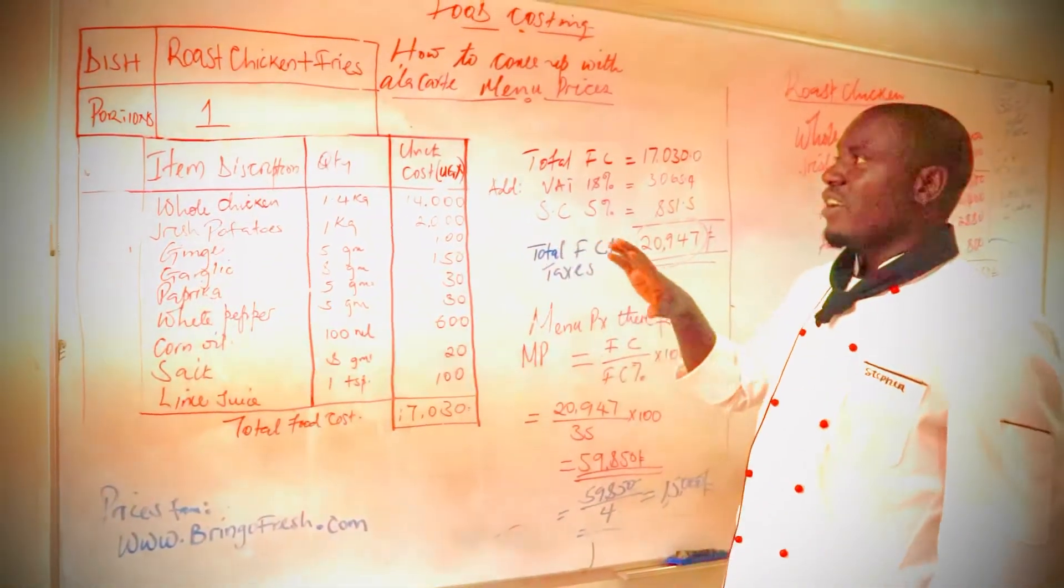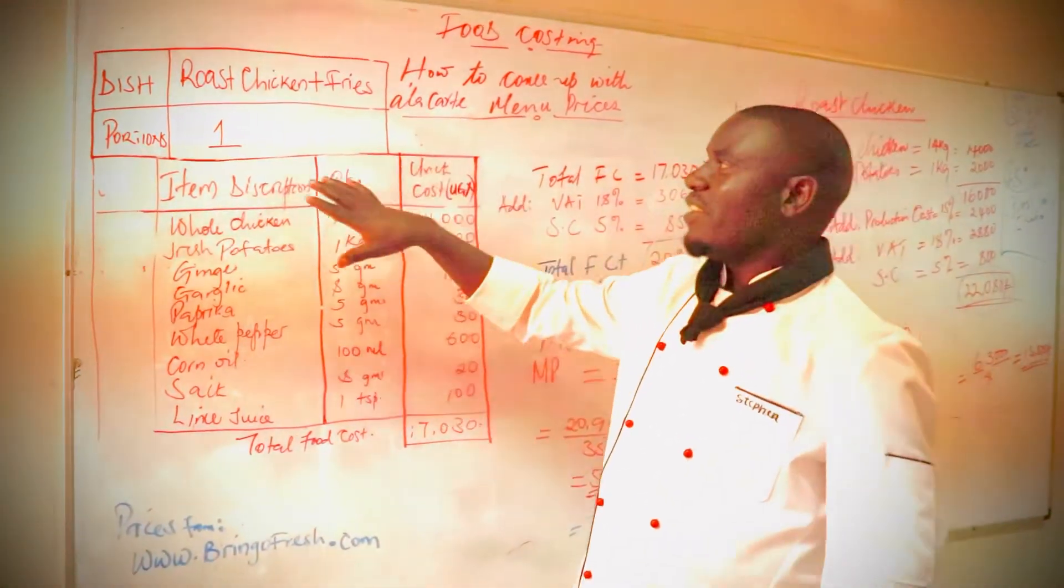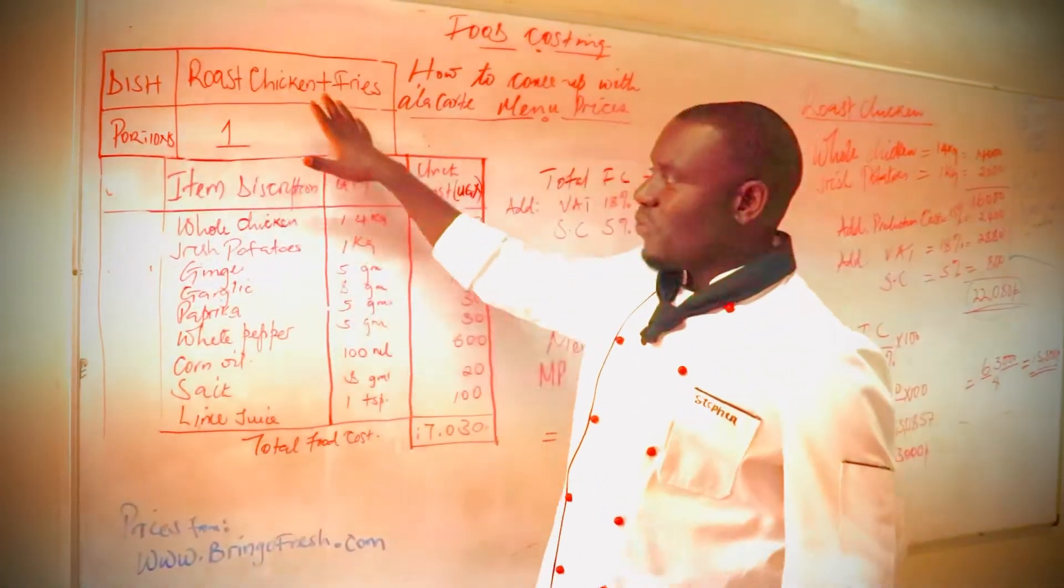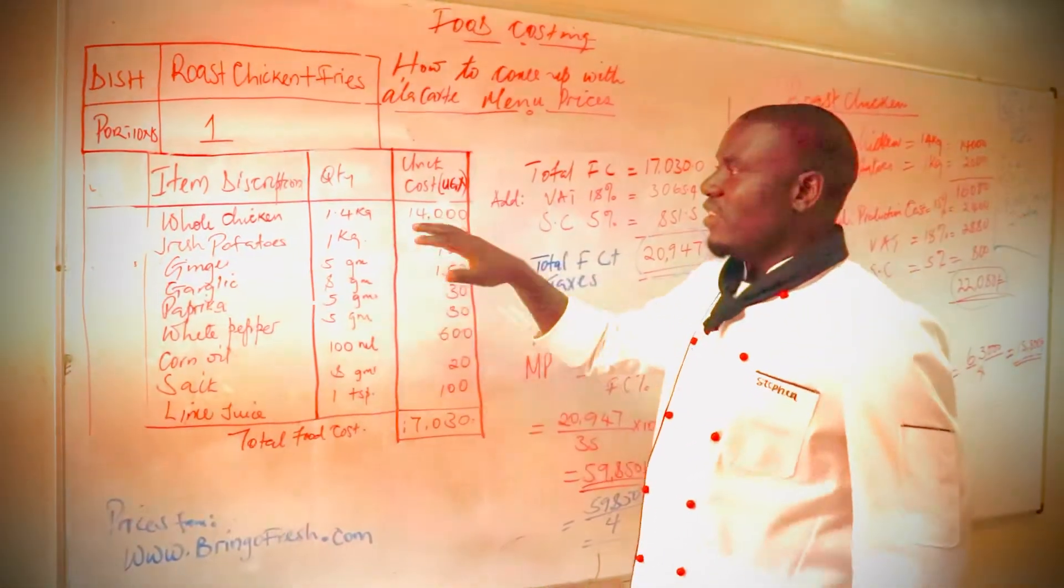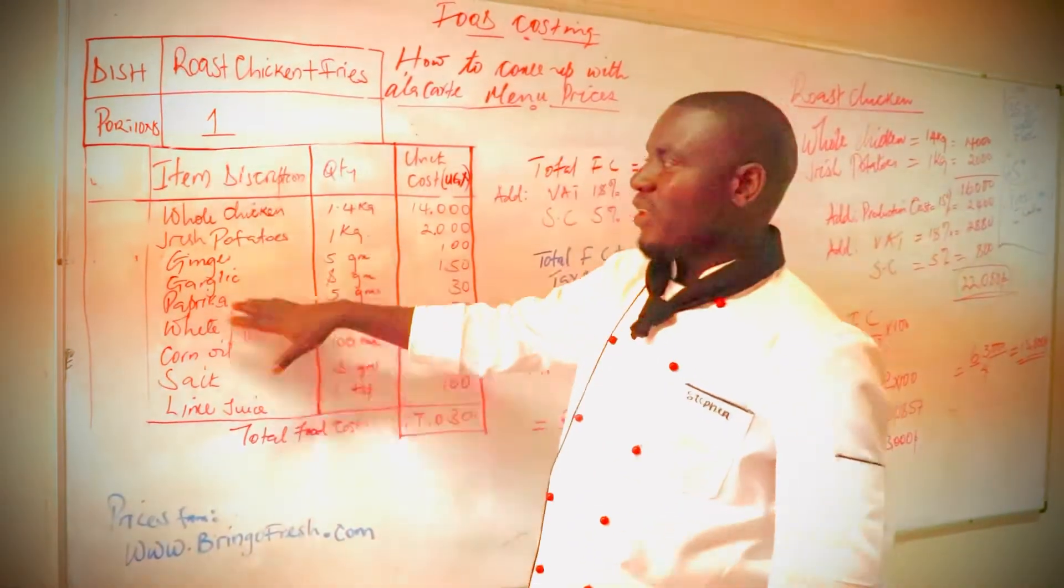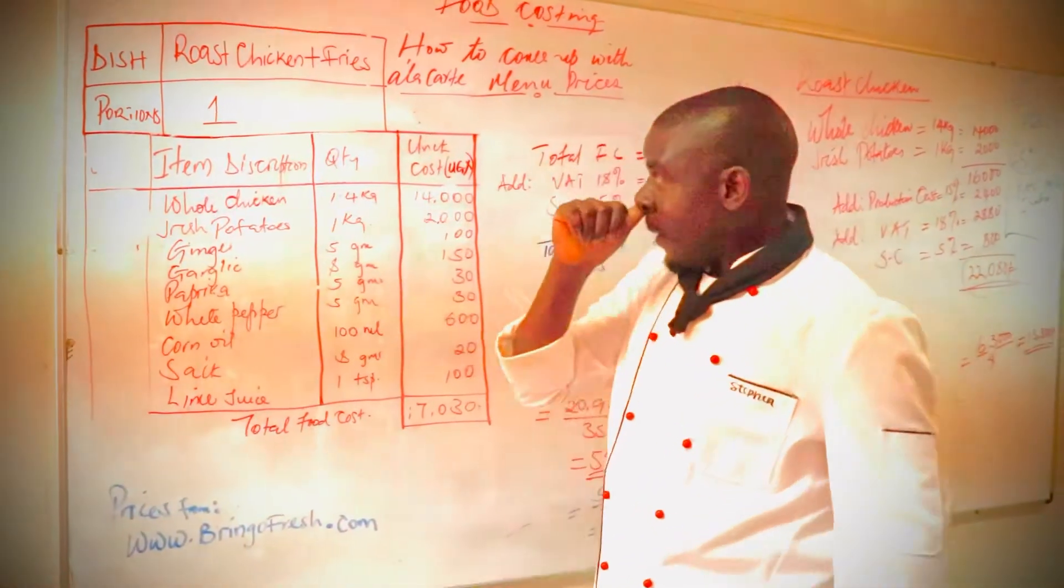Our dish for today is roast chicken with fries and down here we say portion is one, item description, quantity and unit cost. The item description is what do we need, the ingredients we require for the whole dish.